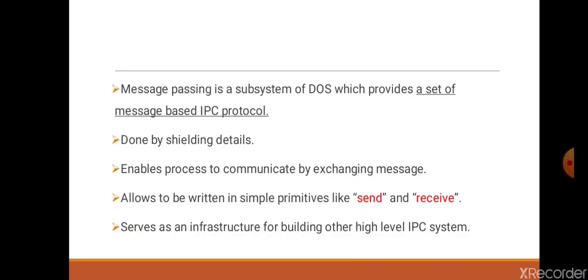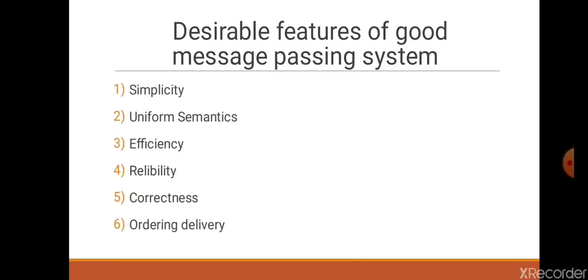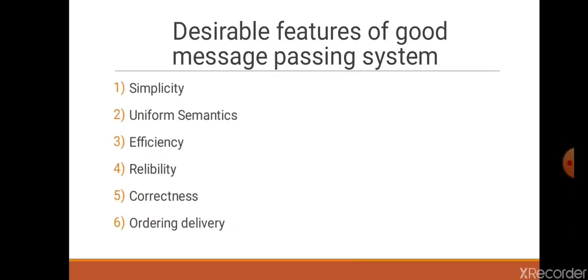Now move towards the second point: desirable features of good message passing system. There are various features of message passing system: first is simplicity, second is uniform semantics, third is efficiency, fourth is reliability, fifth is correctness, and sixth is ordering delivery.